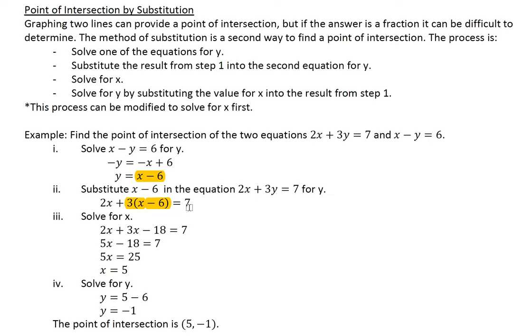The equation only has the variable x in it now so we can use the distributive property and add like terms and then solve the equation. So I get 2x plus 3x minus 18 equals 7. I have 5x minus 18 equals 7.